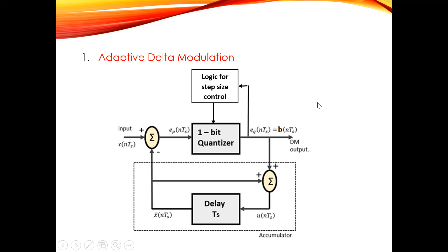To overcome the disadvantages present in the delta modulator system, the adaptive delta modulation system is used, also known as ADM. In ADM, the step size is not constant. When slope overload distortion occurs, the step size becomes progressively larger, and therefore x'(t) will catch up with x(t) more rapidly. When the slope of the input signal is large, the step size is increased. When the input signal is varying slowly, the step size is reduced - thus the step size is adapted as per the level of the input signal.